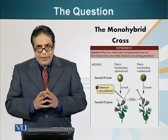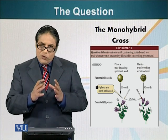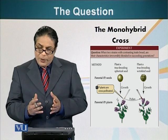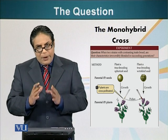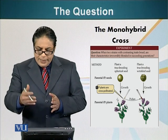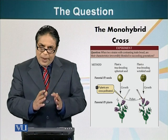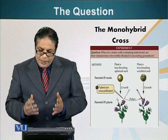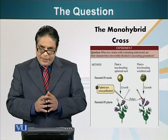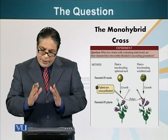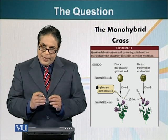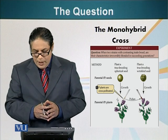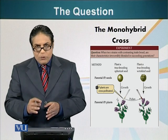The first experiment involved the shape of the seed. Mendel noticed two types of seeds: a spherical shape and a wrinkled shape. Before beginning his experiment, he wanted to ensure the plants were true breeding. To do this, he crossed plants carrying a specific trait with plants of the same trait for several generations. For example, he crossed plants with spherical seeds with other plants with spherical seeds to ensure they were true breeding and consistently produced spherical seeds. He did the same with plants that had wrinkled seeds, to ensure they were also true breeding plants that produced wrinkled seeds.